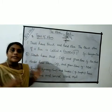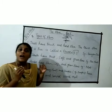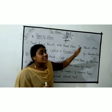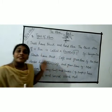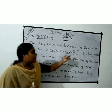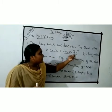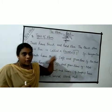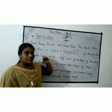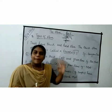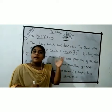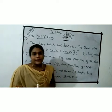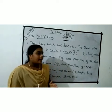Trees have thick and hard stems. The thick stem of a tree is called a trunk. Examples of trees with trunks are the banyan tree, jackfruit tree, and coconut tree.